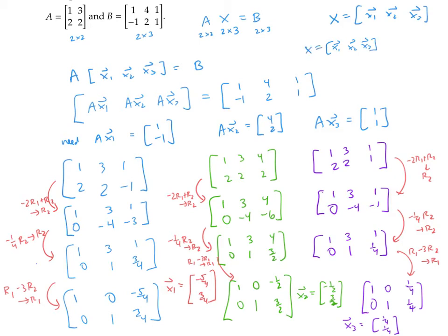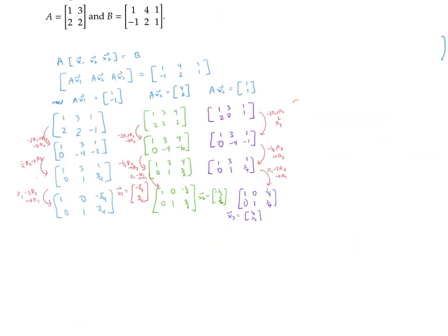So I have my solution: the matrix [x1, x2, x3], otherwise known as x, is going to be my three answer vectors strung together — [-5/4, 3/4], [-1/2, 3/2], and [1/4, 1/4]. But I also have an idea for how to do this more efficiently. Instead of doing the row reduction process three separate times for the three vectors, what if I just string those vectors together and do the row reduction process once? So I'm going to augment A with all three column vectors of B and apply the row reduction operations in one fell swoop.